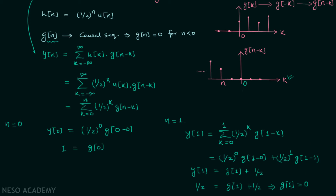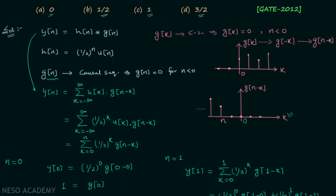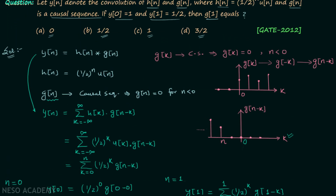Looking at the four options, option a is the correct answer. We were required to calculate g[1] and it is equal to 0. That's all for this lecture; I will see you in the next one.